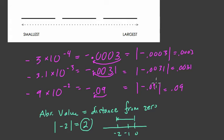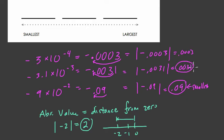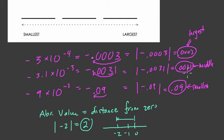So here, the larger the absolute value, the smaller the number. Why? Well, 0.09 has the largest absolute value, so that's the smallest number. Then 0.0031 is kind of in the middle — the second largest number. And 0.0003 is the largest number. This is really confusing, because the smallest absolute value gives you the largest number, and the largest absolute value gives you the smallest number.